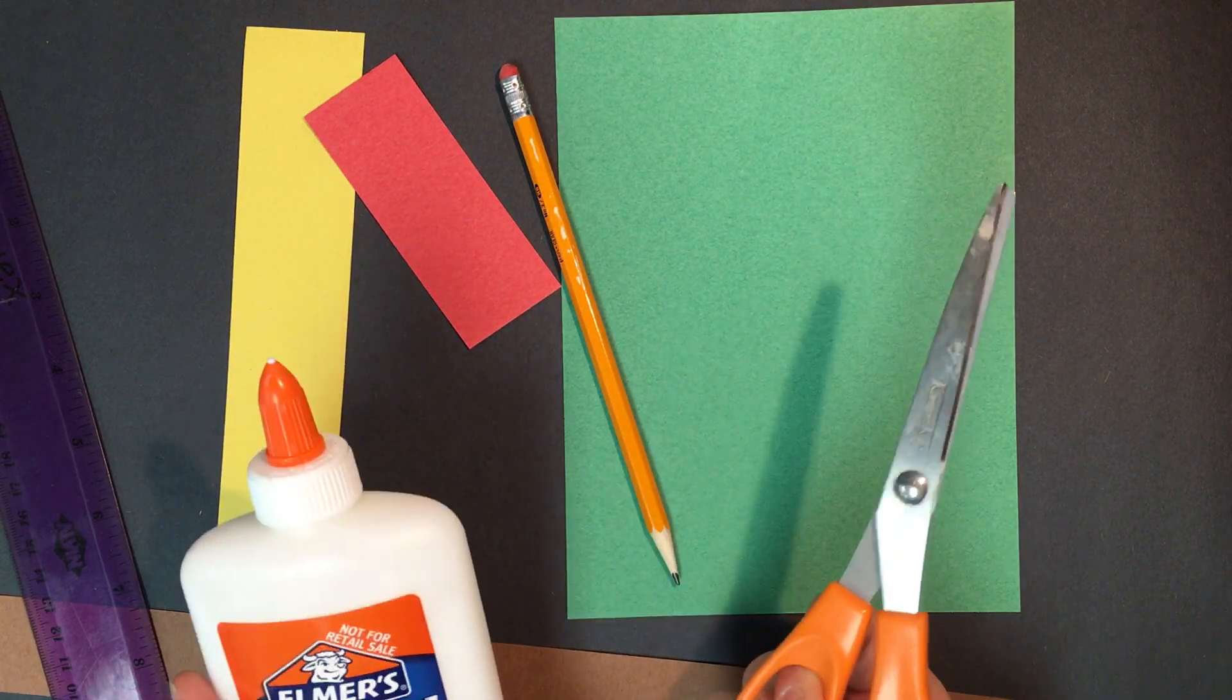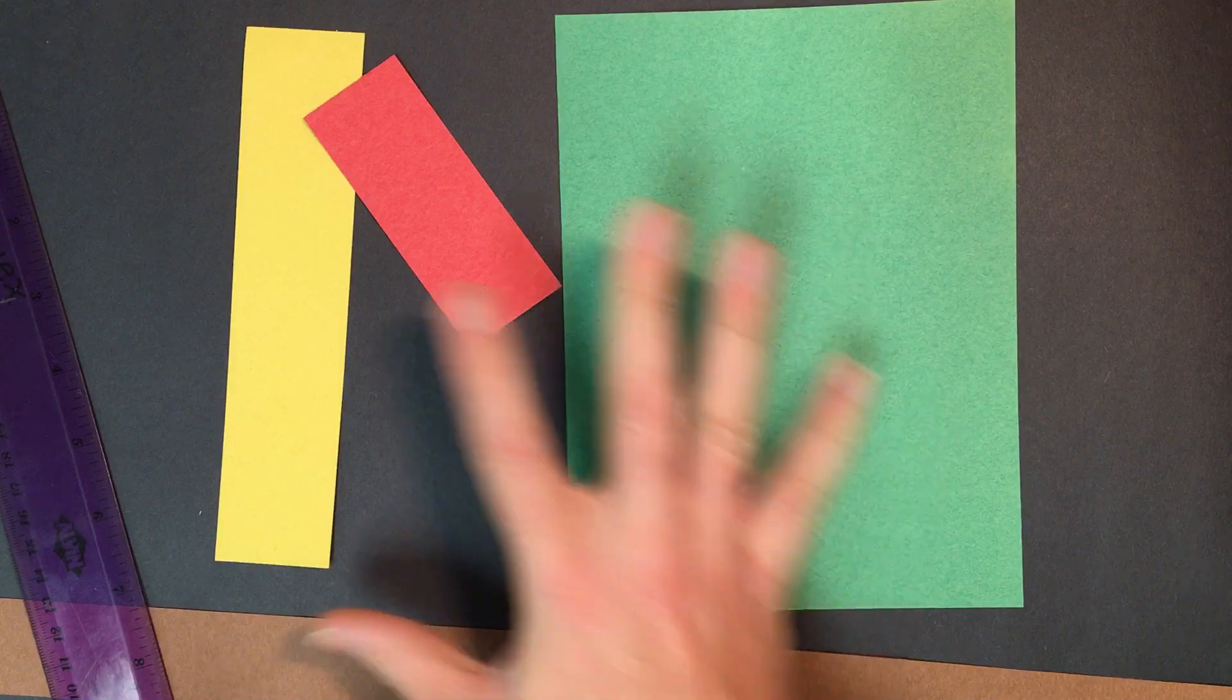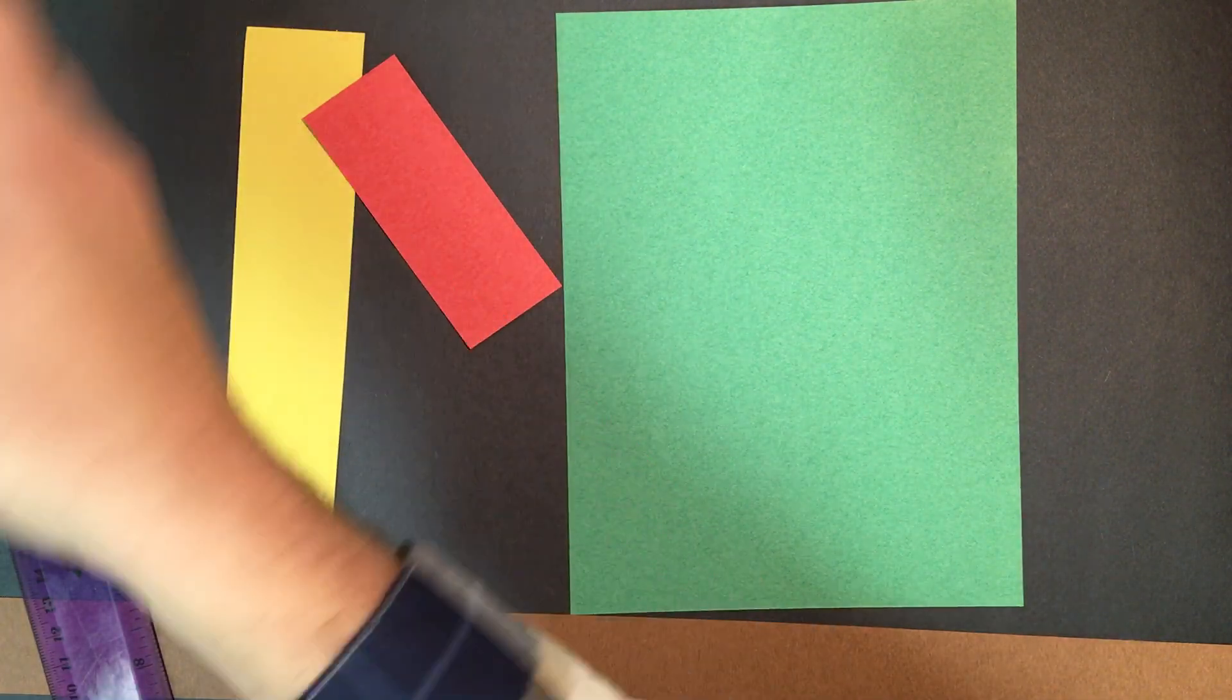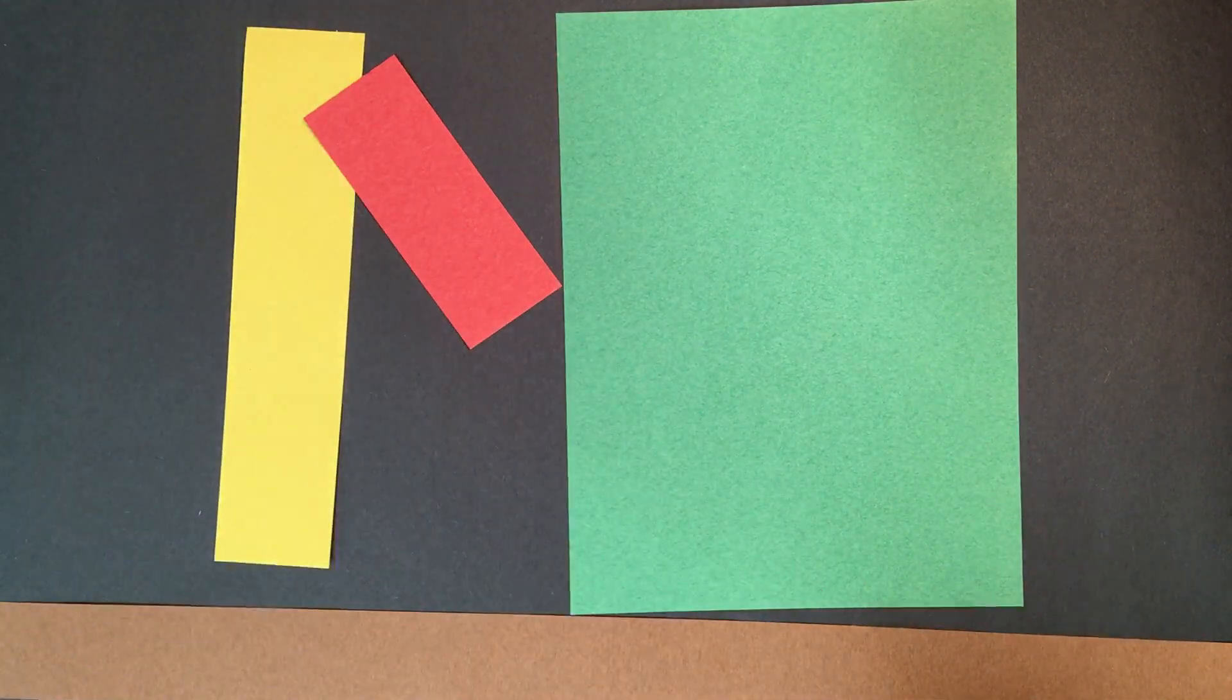You need a scissors, glue bottle, pencil, and some construction paper that's pre-cut to size. Let's get started and of course a ruler.